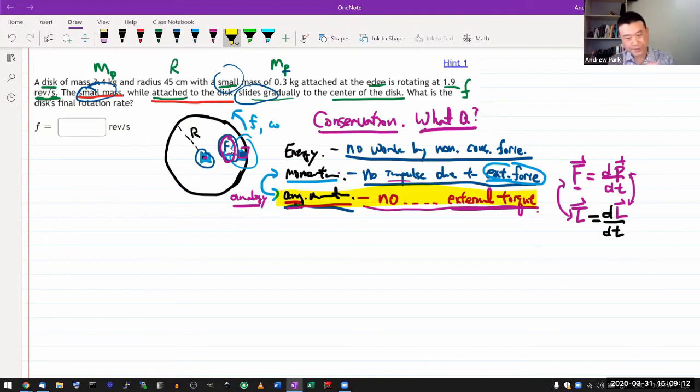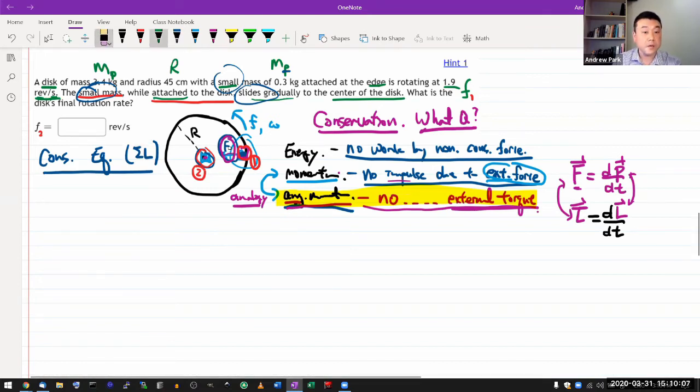Now that I have a conserved quantity to work with, I can use conservation law strategy. My second step is to identify a useful snapshot. Snapshot one is where the mass is out here on the edge, and snapshot two is where the mass has slid to the center. Those connect the things I know with the things I don't know. This will be F1, this will be F2. Finally, my third step is to write down the conservation law equation. I'm going to use conservation of the total angular momentum.